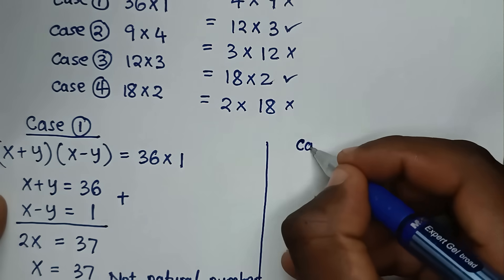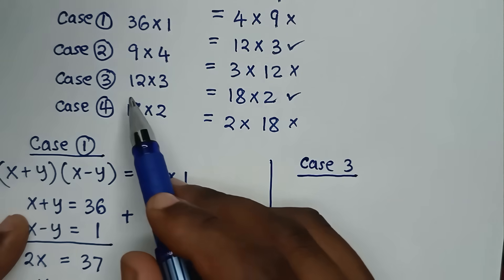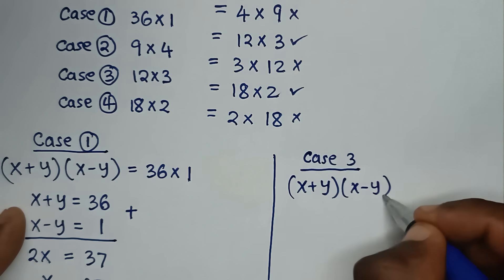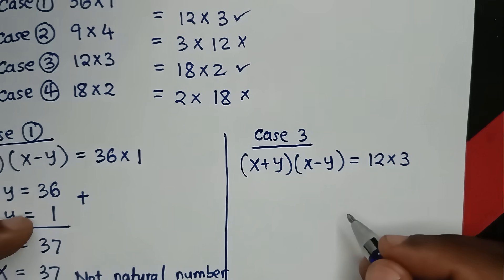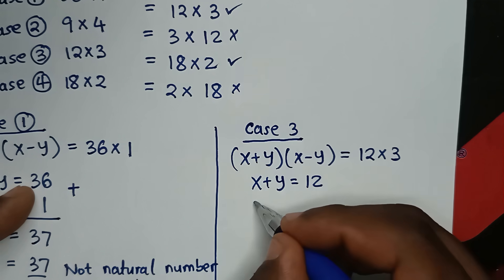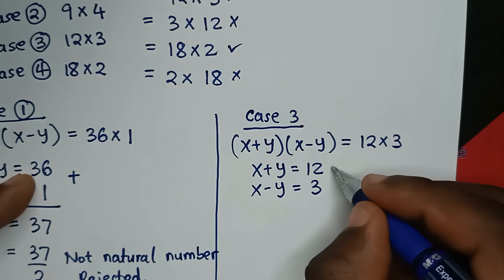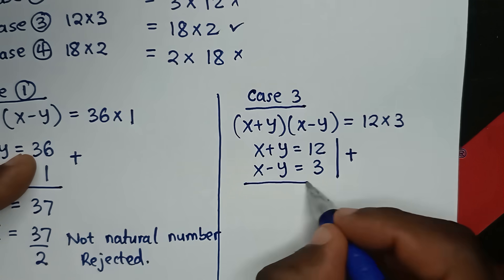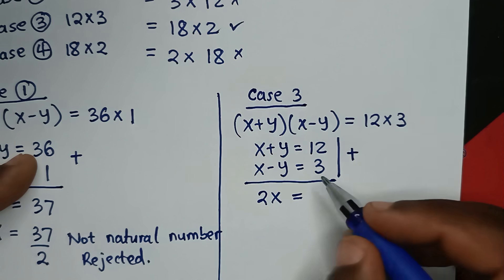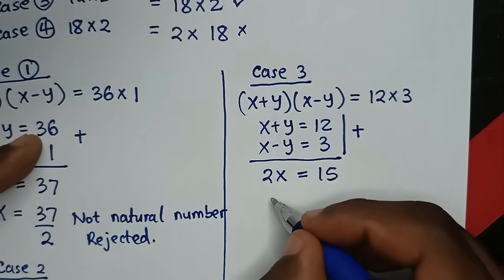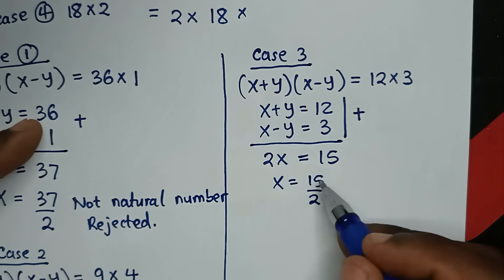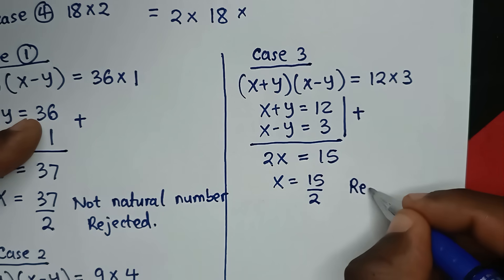From Case 3: (x plus y) times (x minus y) equals 12 times 3. So x plus y equals 12 and x minus y equals 3. Adding these two equations: 2x equals 15, so x equals 15 over 2. This is not a natural number because it is a fraction. This solution is rejected.